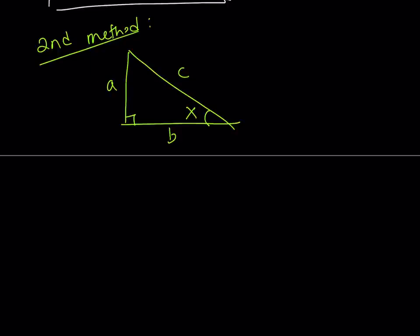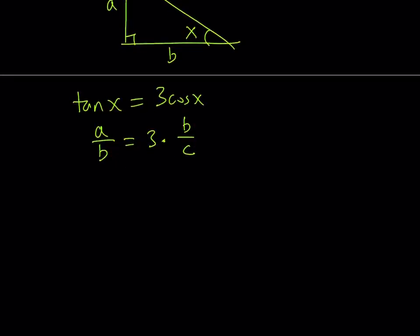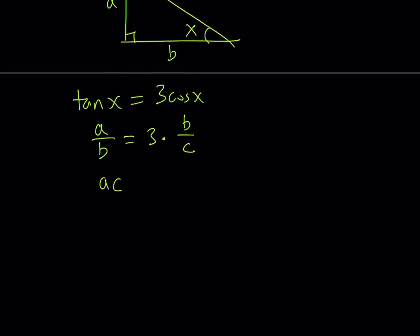But anyways, so we have the equation tangent x equals 3 cosine x. So from here, we can write the tangent x as a over b. And then cosine x can be written as b over c, as you know, by using the definitions of these trigonometric functions. We can express them as ratios. Now, this gives us something. What does it give us? Well, let's simplify this a little bit. If you do cross multiplication, you're going to get something like ac equals 3b squared.